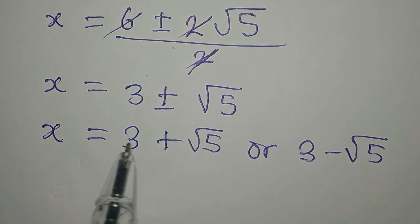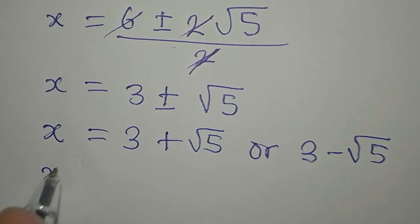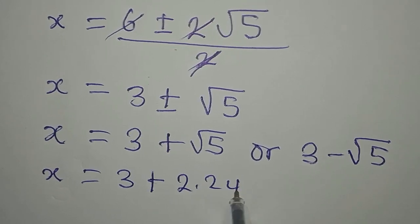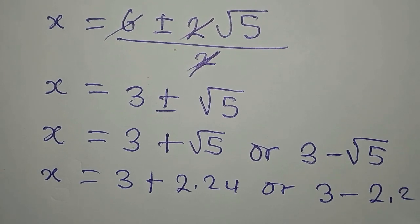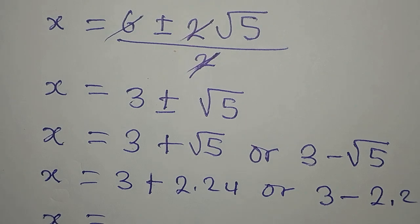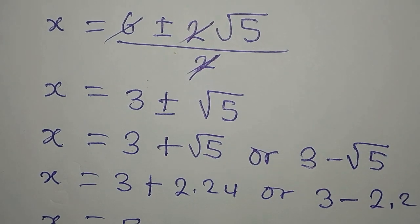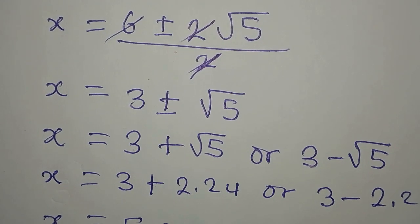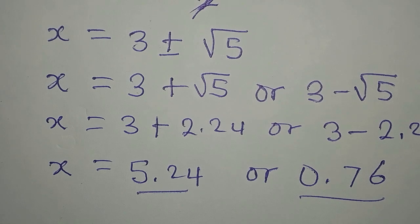However, it's obvious that both values cannot satisfy the original equation. Square root of 5 is approximately 2.24, so x equals 3 plus 2.24 which is approximately 5.24, or x equals 3 minus 2.24 which is approximately 0.76. These are the two candidate values of x, but we need to check which one satisfies the original equation.